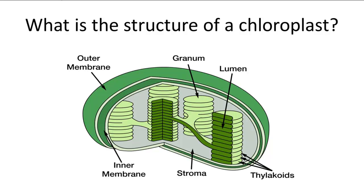Let's take a closer look at the structure of a chloroplast and where photosynthesis occurs. Like mitochondria, chloroplasts have double membranes. Here's the outer membrane, and here's the inner membrane.